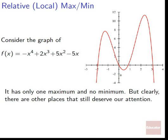Consider the function -x⁴ + 2x³ + 5x² - 5x. Technically this function has only one maximum, at x = 2 — the highest point it achieves. It has no minimum because it keeps dropping off to the sides forever. However, even without an overall minimum, some points are locally high or low — this is the idea of relative maximum and minimum. These places are not necessarily a max or min for the entire function, but they are in their neighborhood.